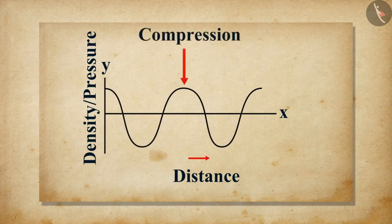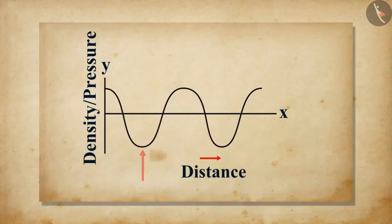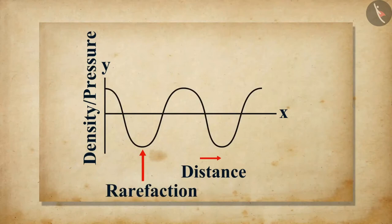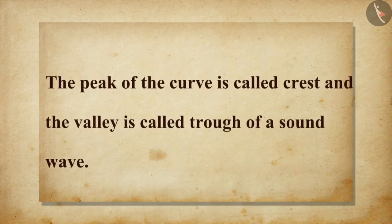The regions where particles are crowded are compressions; they are represented by the upper portion of the curve. The peak of the curve represents the maximum compression. Therefore, density and pressure are high in compressions. The regions of low pressure where particles are spread apart are rarefactions; they are represented by the lower portion of the curve. The peak of the curve is called the crest and the valley is called the trough of a sound wave.